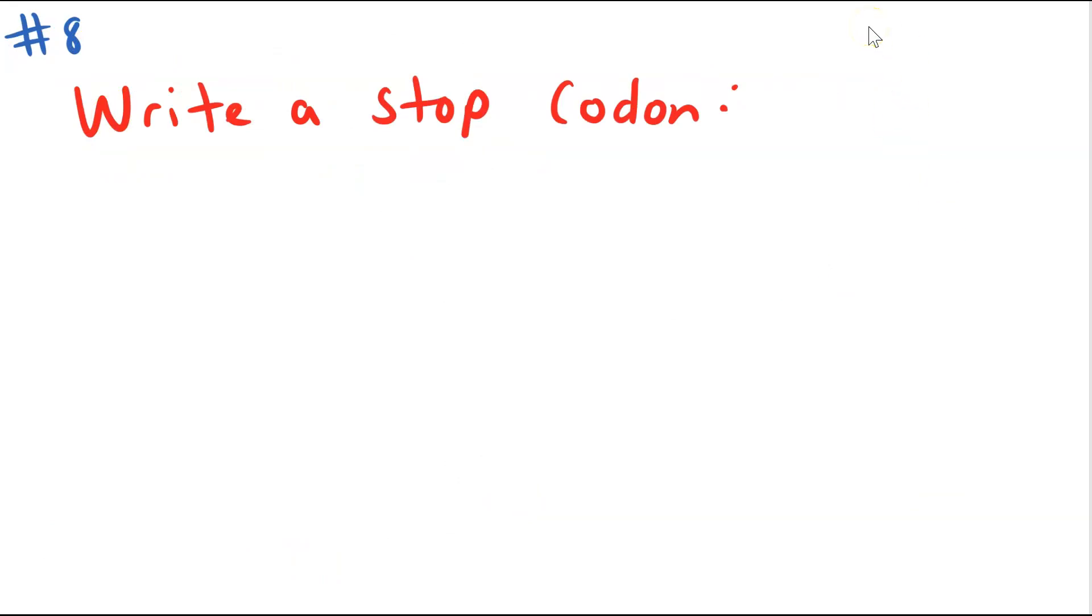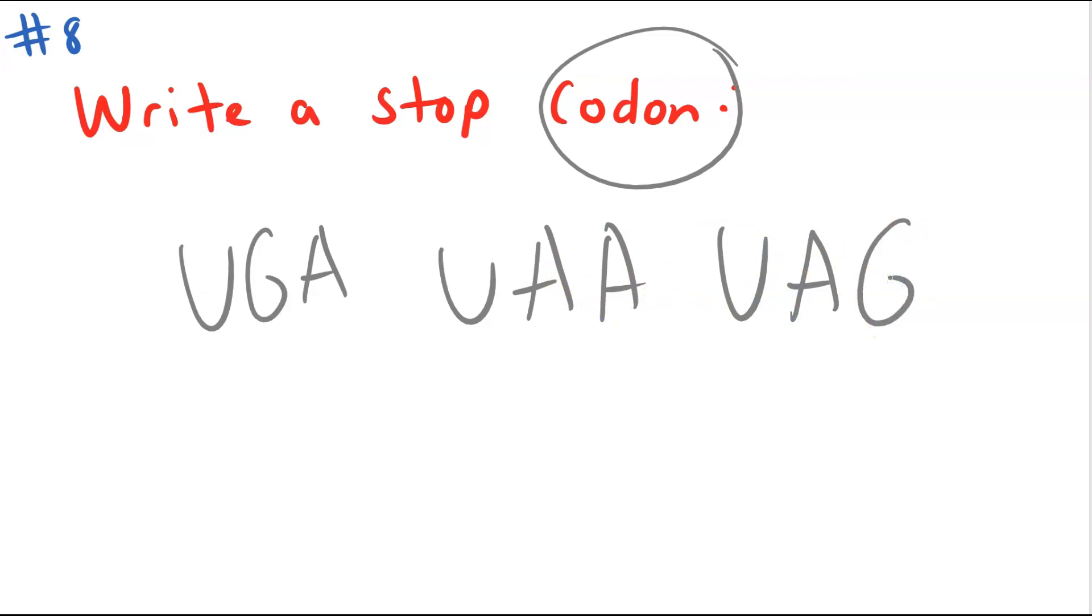Number eight asks you to write a stop codon. So again, it's a codon, one of the three in the genetic code table that creates a stop. Over time, you'll probably develop a favorite one. There's UGA, which is my favorite. UAA and UAG. Those are all going to lead to the stopping of a translation. It will not add an amino acid and the protein will stop right there.